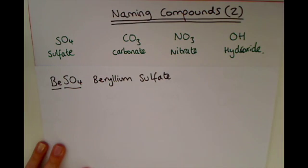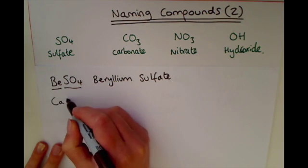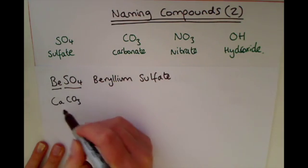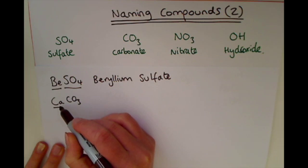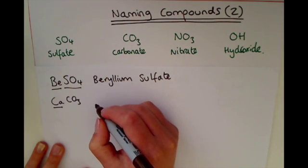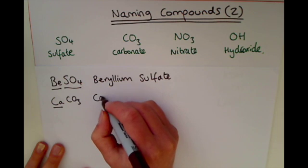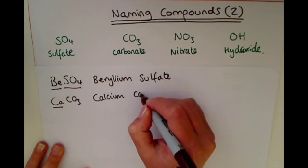For an example of a carbonate, you might see something like CaCO3. Look that up in the periodic table — Ca is the atomic symbol for calcium. So this compound is called calcium carbonate.